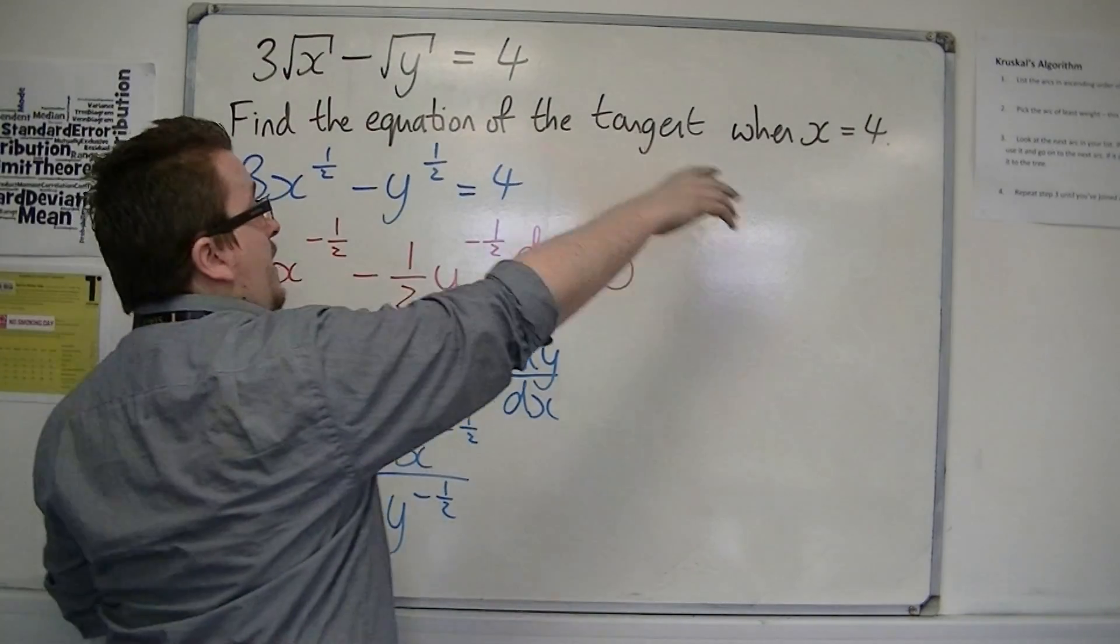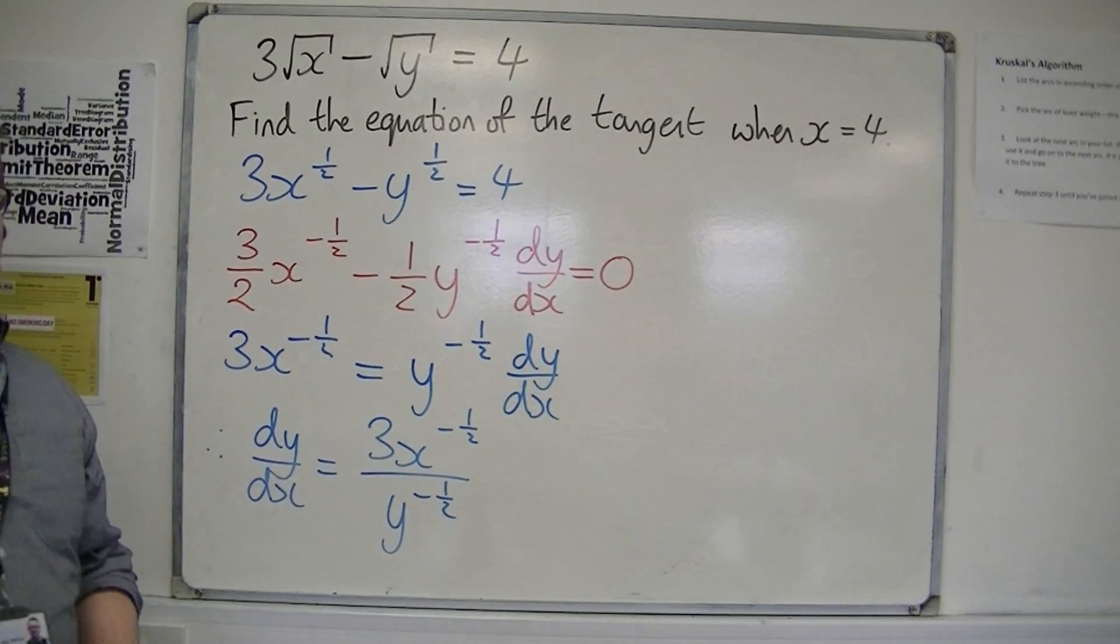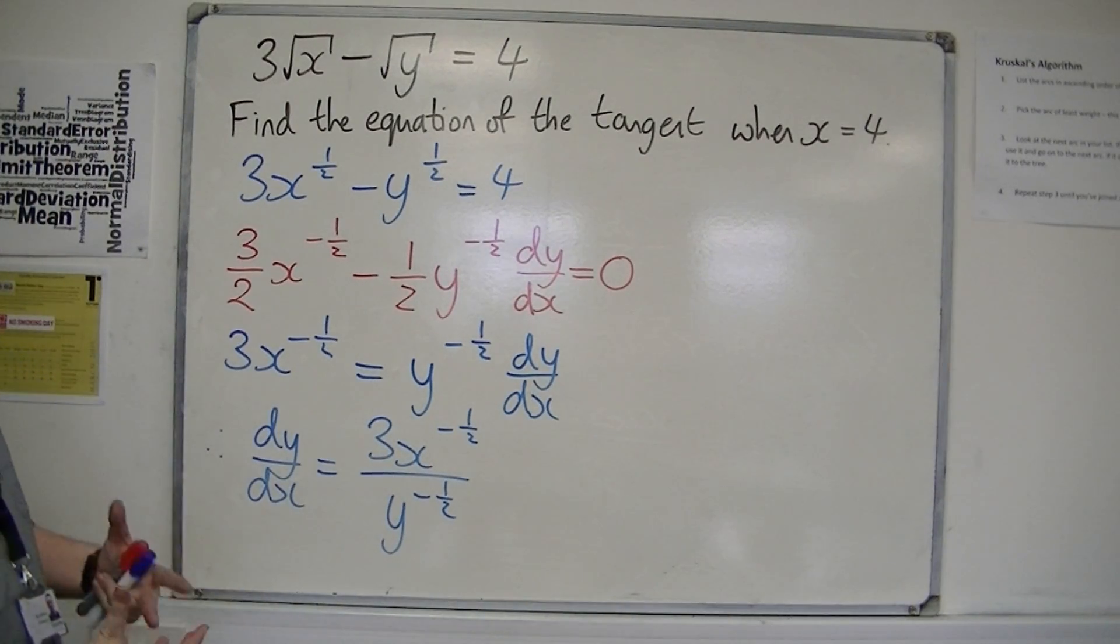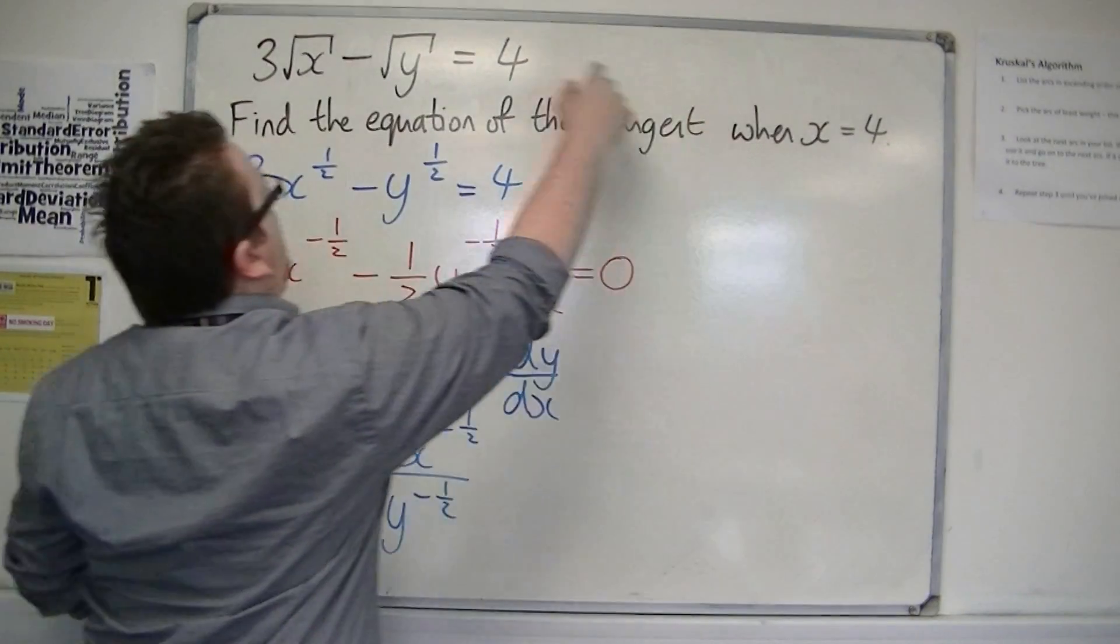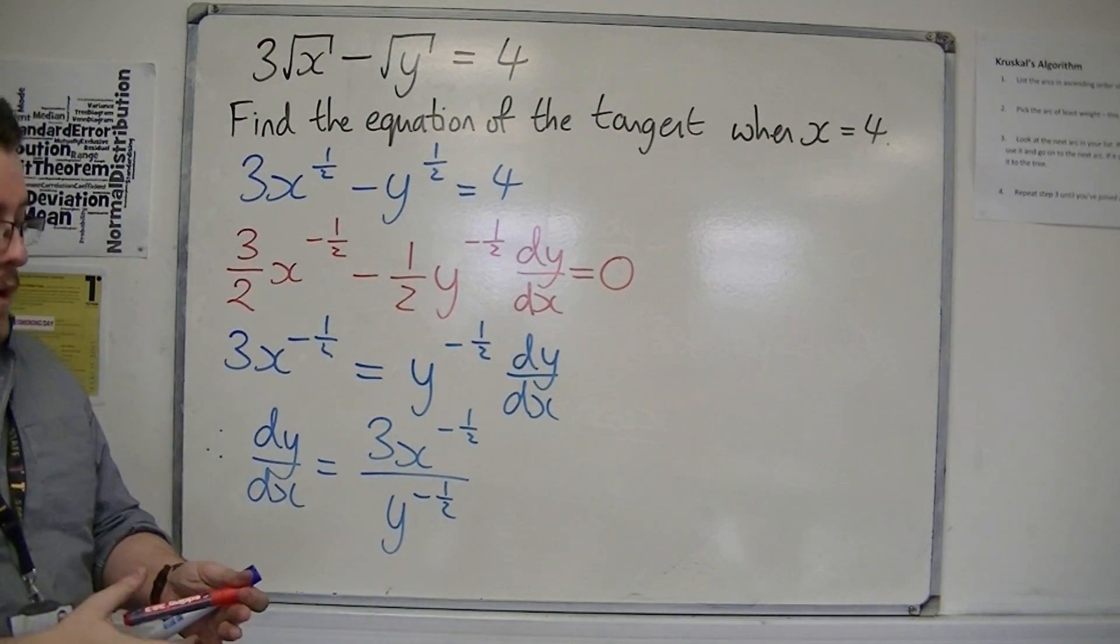Now I know that I'm looking at the point when x equals 4, but I need the y value as well. So I'm going to need to substitute x equals 4 into my original equation to get a value of y.